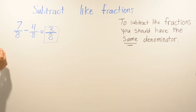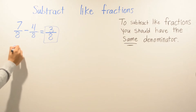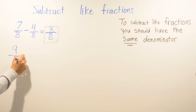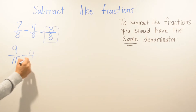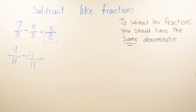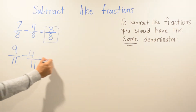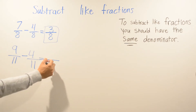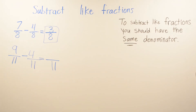For the next problem we're going to do 9 over 11 minus 4 over 11. Same thing — the denominators have to be the same. In this case they're both 11, so you go ahead and just put 11 here, it doesn't change. And we subtract 9 minus 4.